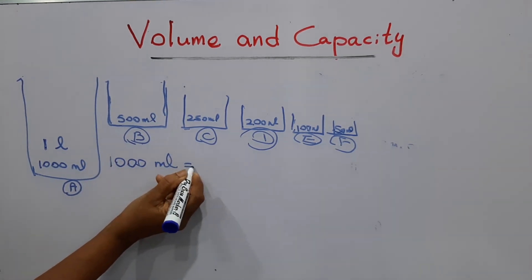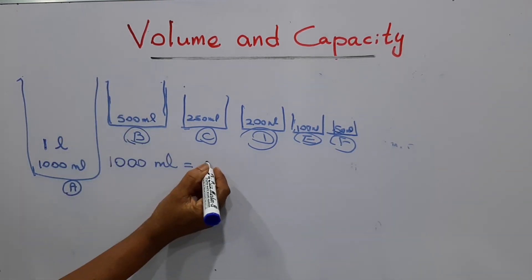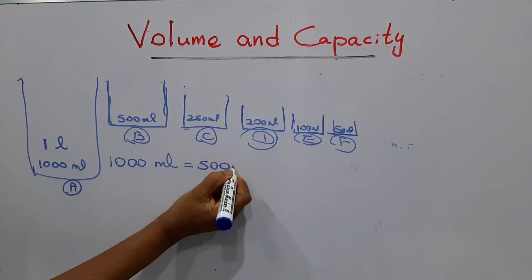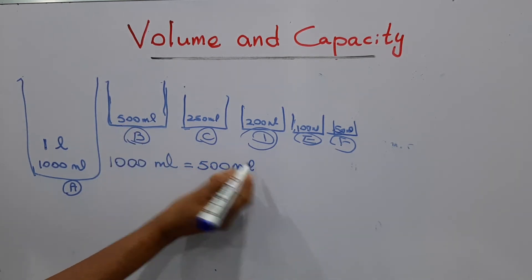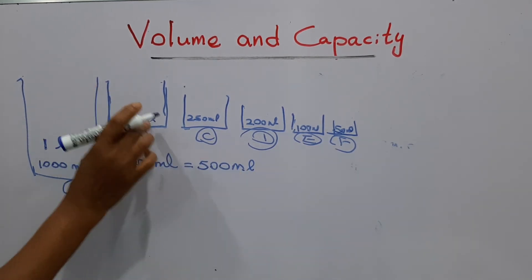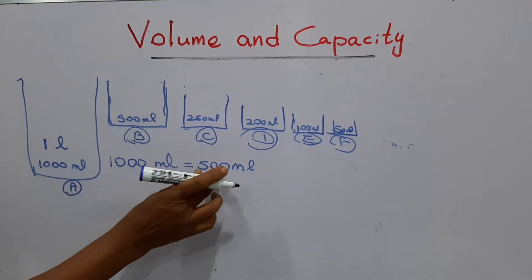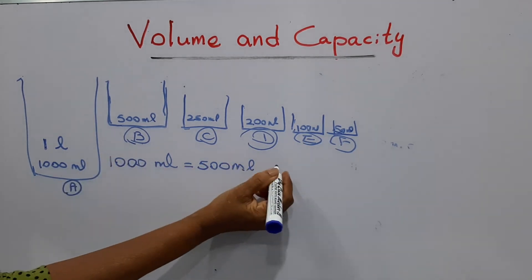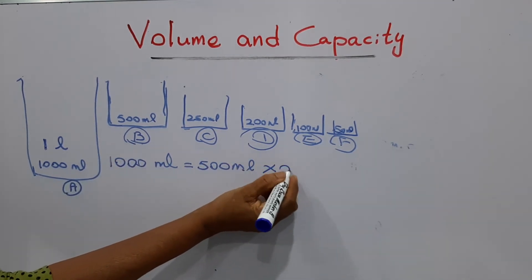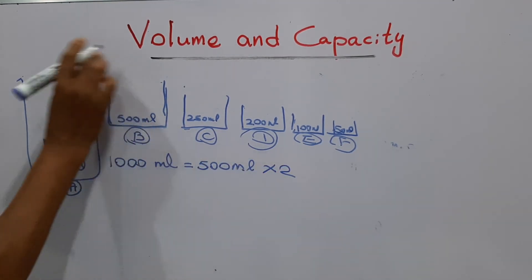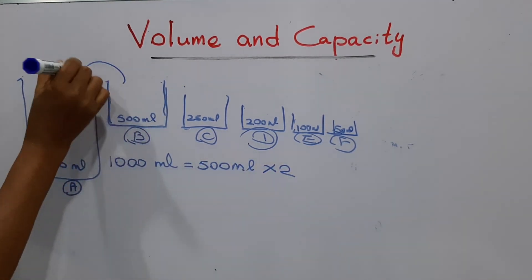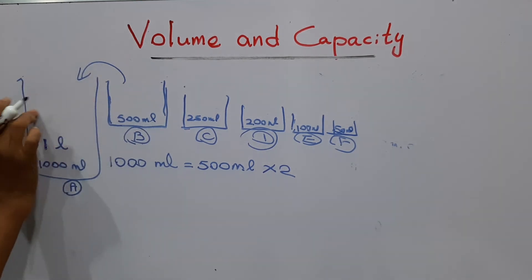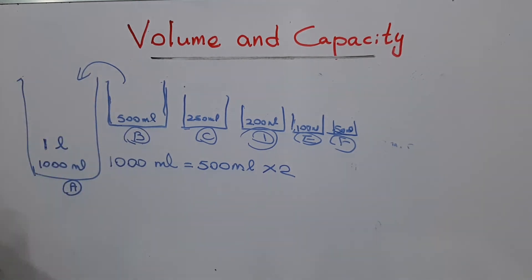We are going to use the B container. The capacity of B is five hundred milliliters. Then how many five hundreds are there in one thousand? We have to put water two times to fill this vessel.